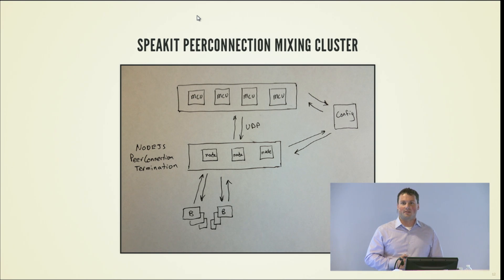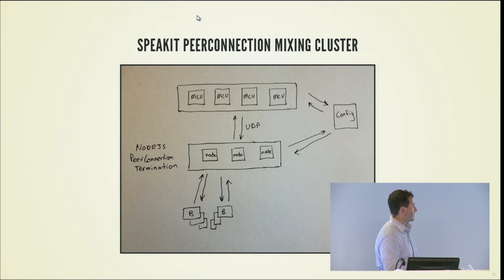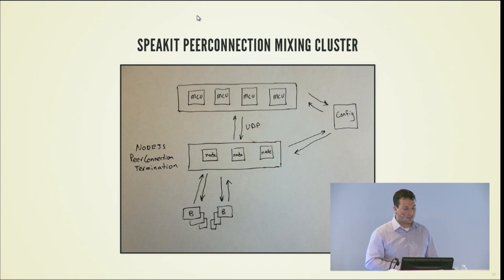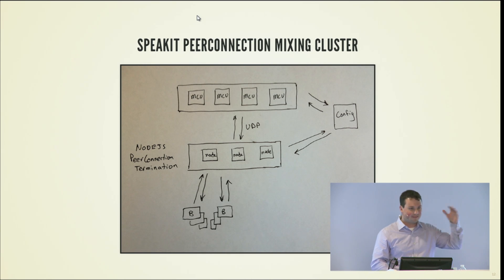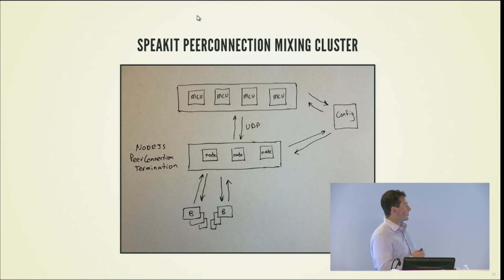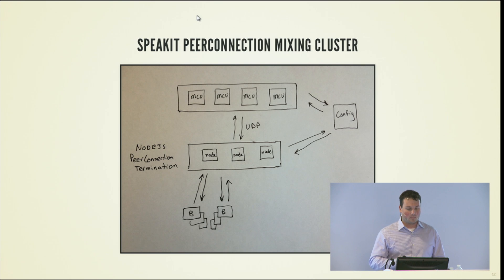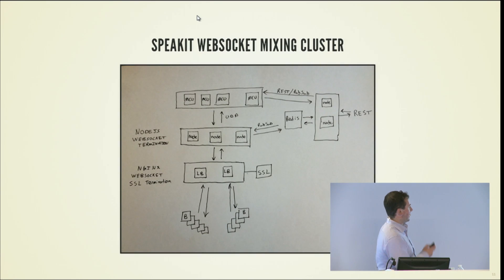Once PeerConnection and Chrome's echo cancellation came on board, we started work — still in progress — on removing the need for that NGINX web server. Now we can have a direct connection from the browser to a PeerConnection running in Node.js, with a C plugin running underneath Node.js handling the raw binary data. We can then transmit that back to our MCUs. On the right-hand side, I simplified things and just put 'config' — it's actually the same configuration, but I got sick of drawing.